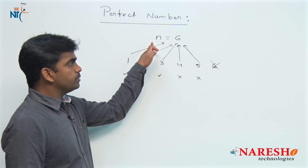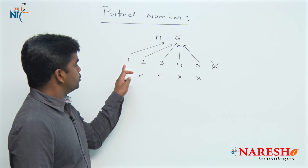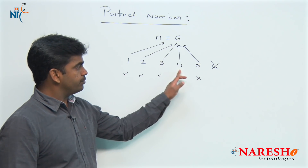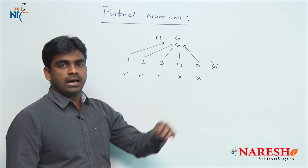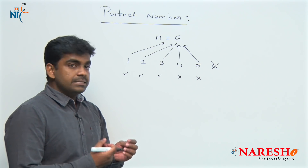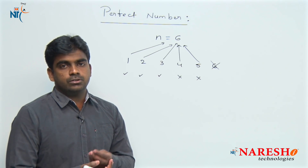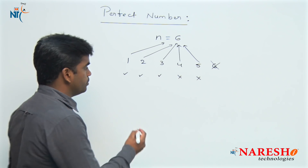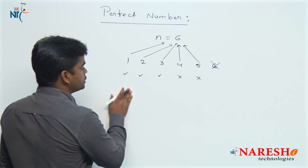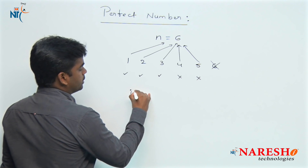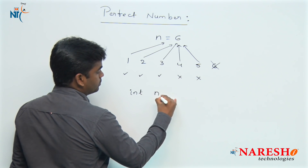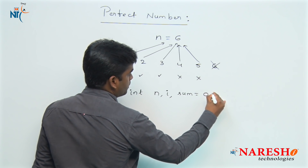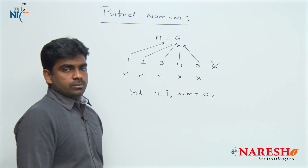To implement this, we need to declare an N variable, a loop variable I to repeat from 1, 2, 3, 4, 5 up to less than N, and a sum variable to accumulate the sum of factors. Initially we declare N, I, and sum.